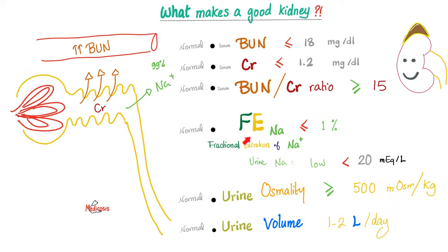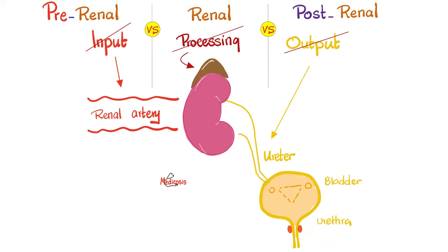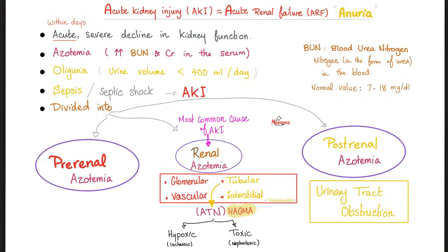A good kidney does not lose lots of sodium in the urine — giving a fractional excretion of sodium less than 1% and urine sodium less than 20 milliequivalents. A good kidney is capable of concentrating the urine, raising urine osmolality, and producing between 1 and 2 liters of urine per day. In intrarenal azotemia, the problem could be glomerular disease, tubular disease, or interstitial disease — together called tubular-interstitial, divided into hypoxic and toxic — and don't forget vascular.